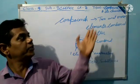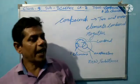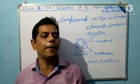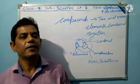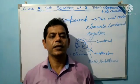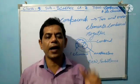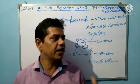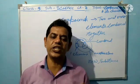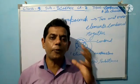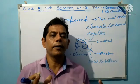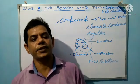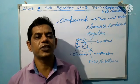Now, the characteristics of a chemical compound. The first characteristic is: a chemical compound is obtained by the chemical combination of two or more elements in a definite proportion of mass.